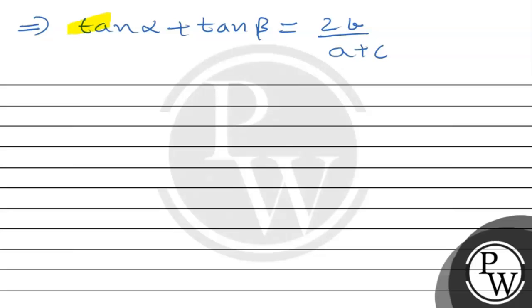Hence, we proved that tan alpha plus tan beta is equal to 2B divided by A plus C. I hope you understood it well. All the best. Thank you.